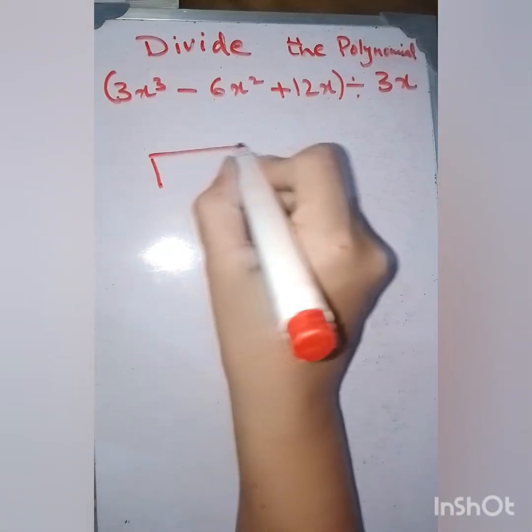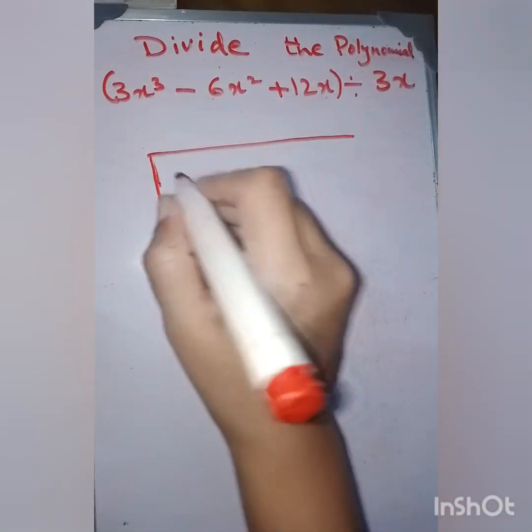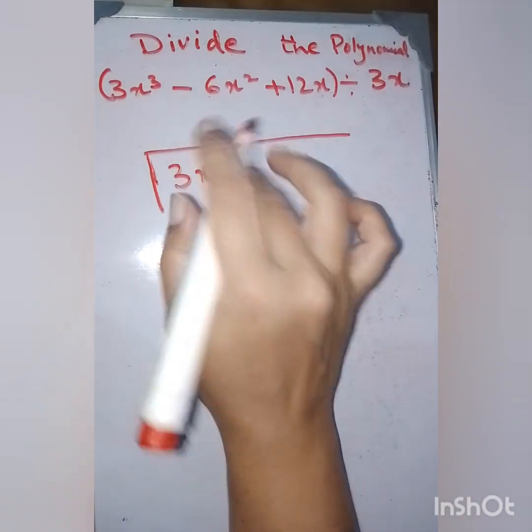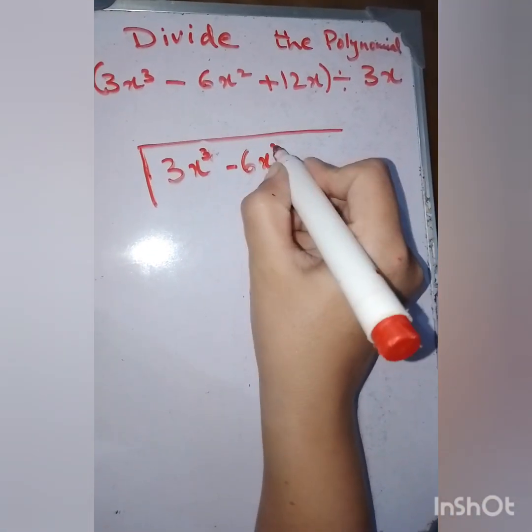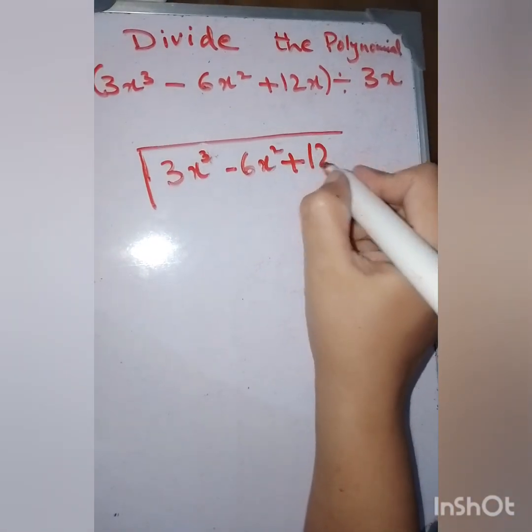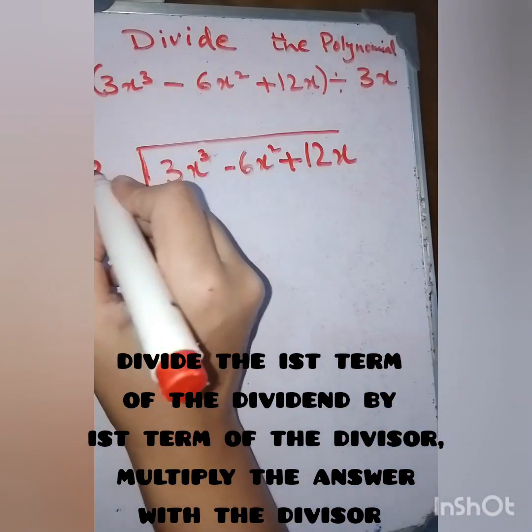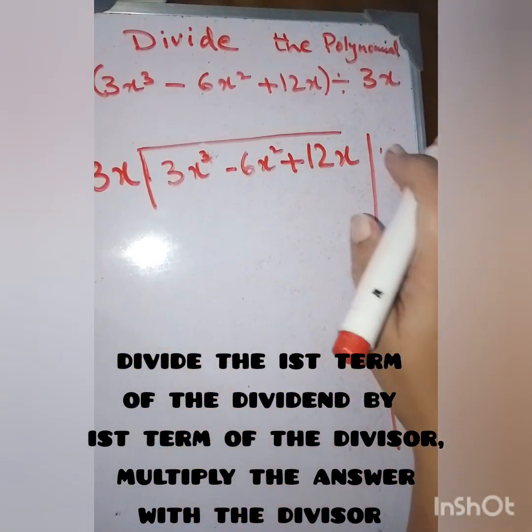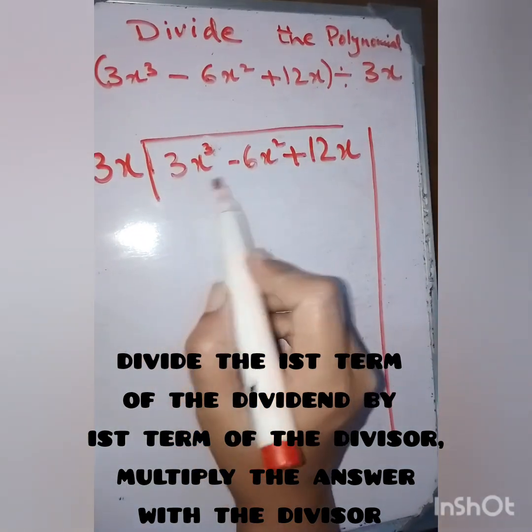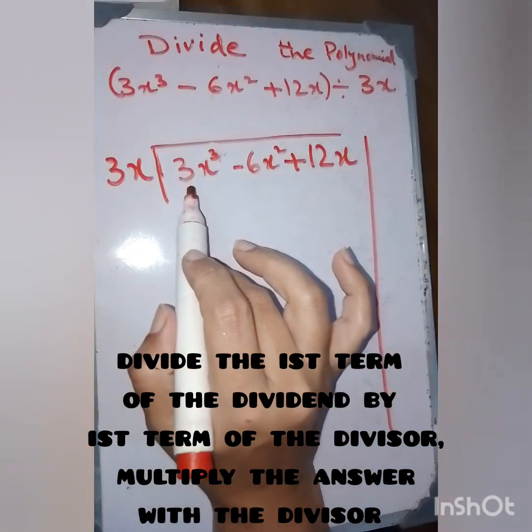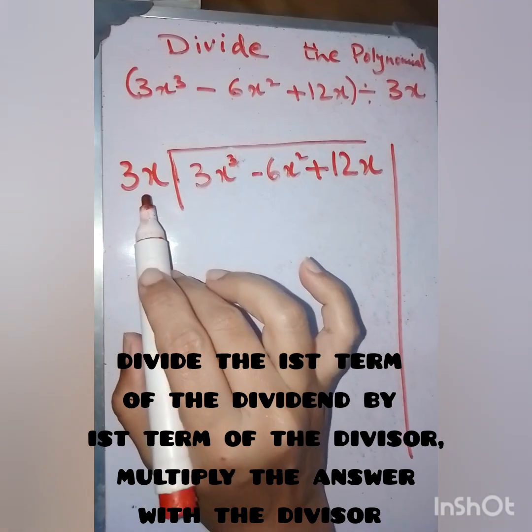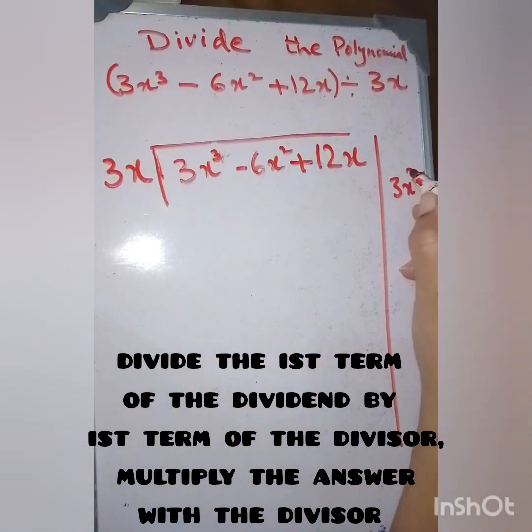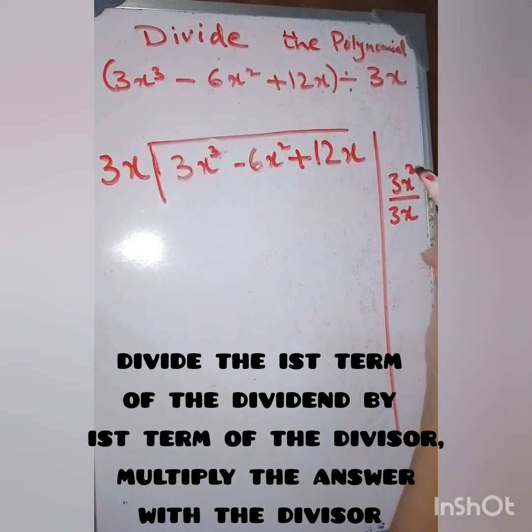Here I'm going to write the dividend, which is the longest expression: 3x³ - 6x² + 12x. The divisor is 3x. According to the rule, we are going to divide the first term of the dividend by the first term of the divisor. We have only one term in the divisor, so we divide by it.